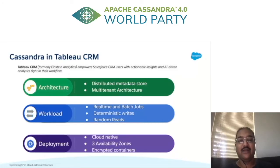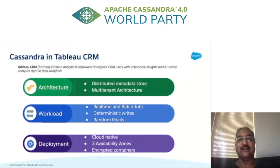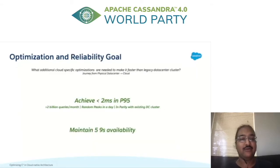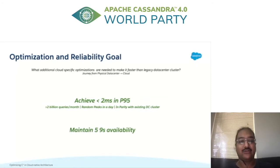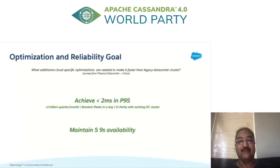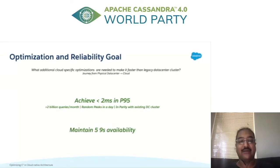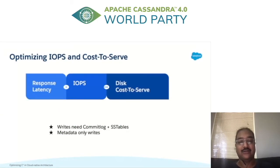In terms of deployment, we are cloud-native with three availability zones and route traffic using Cassandra containers and encryption. Due to our complex implementation of Cassandra — both in terms of containerization and encryption — we set performance and reliability goals to follow our existing data center deployment. We wanted to make Cassandra faster than our already performant physical data center deployment. We set an optimistic P95 read-write latency of less than two milliseconds to ensure parity in transaction throughput and peak smoothness. Our availability goal was also to achieve five nines.